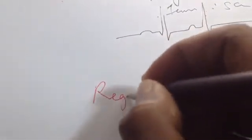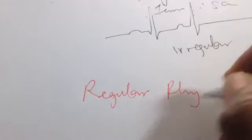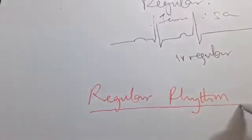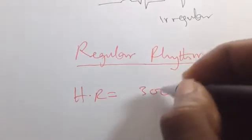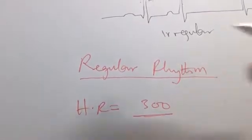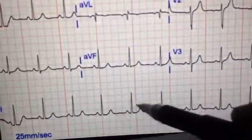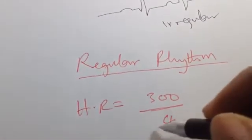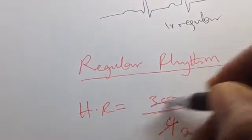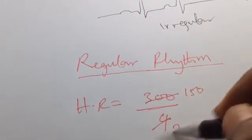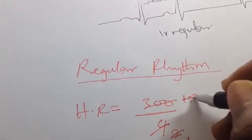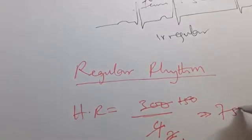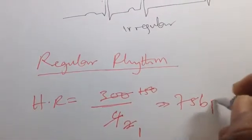For a regular rhythm, you can determine the heart rate by the formula: Heart Rate = 300 ÷ number of large boxes. As we see here, the number of large boxes between successive R-to-R intervals is four. So 300 ÷ 4 = 75 beats per minute. That is the heart rate for this patient — 75 beats per minute.